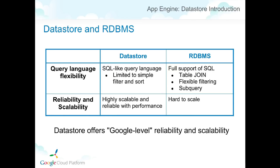Let's compare the Datastore with relational databases. An RDB supports table joins, flexible filtering, and sub-queries. The Datastore supports some of these, but its functionality is limited to simple filtering and sorting. On the other hand, Datastore is highly scalable and reliable without sacrificing performance. RDBs, however, are really difficult to scale.